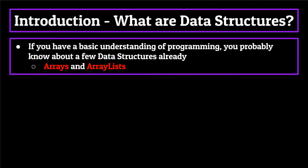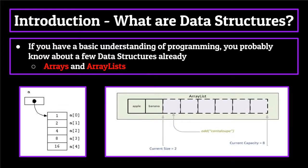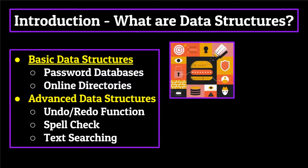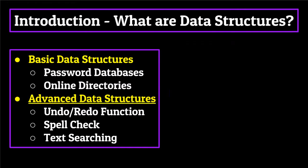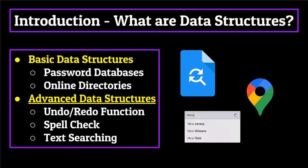If you have a basic understanding of programming, you probably know about a few different data structures already, such as the array and the array list, also known as the list in Python. But if you're going to be pursuing a career in computer science, just knowing these two is definitely not going to cut it. While basic data structures such as the array are used frequently, more advanced data structures are being put to use all around you — the undo/redo button in Google Docs, Google Maps on your phone, even the autocomplete feature in your text messages all require the use of more advanced data structures.